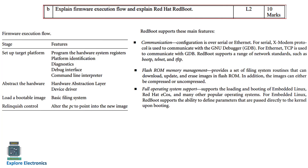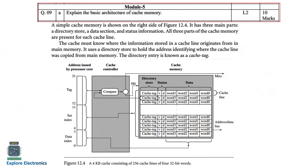The last module question — question 9 — is: explain the basic architecture of cache memory. This is a 4KB cache consisting of 256 cache lines of four 32-bit words. Write this diagram and explain the architecture of the cache — it has a controller with cache memory, and that controller takes the address issued by the processor and manages data retrieval.